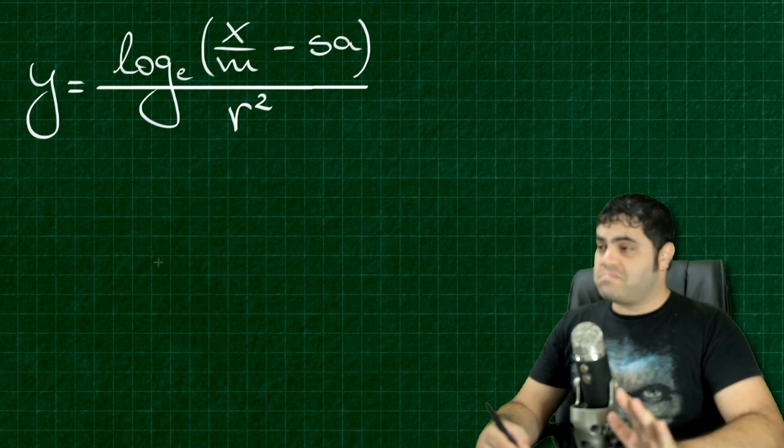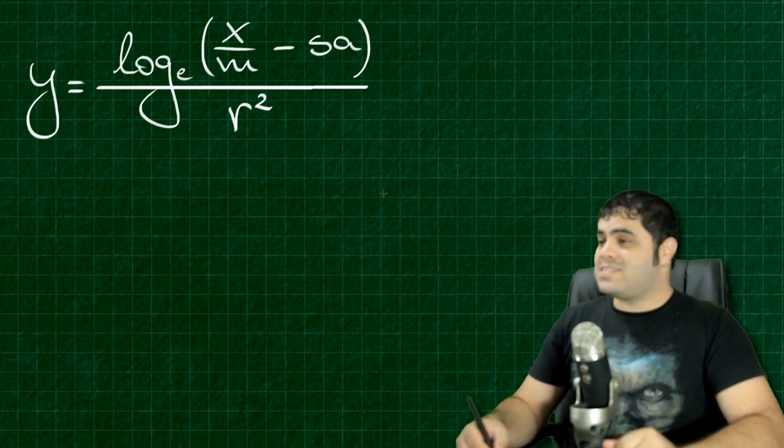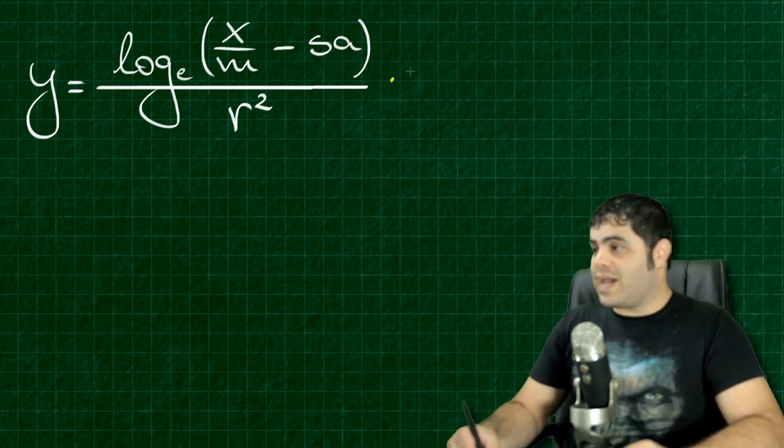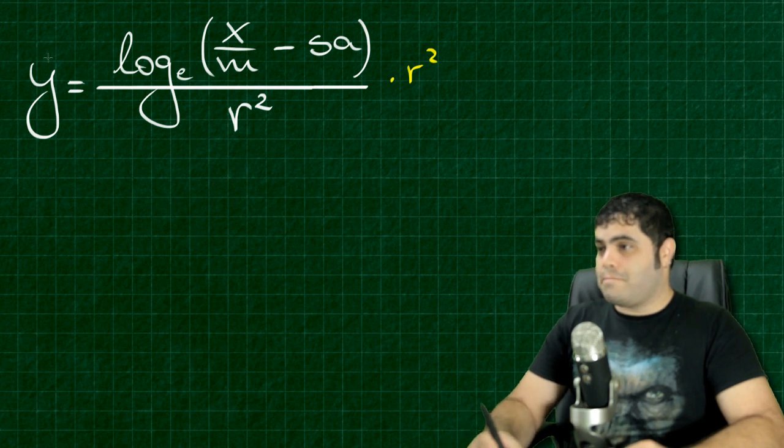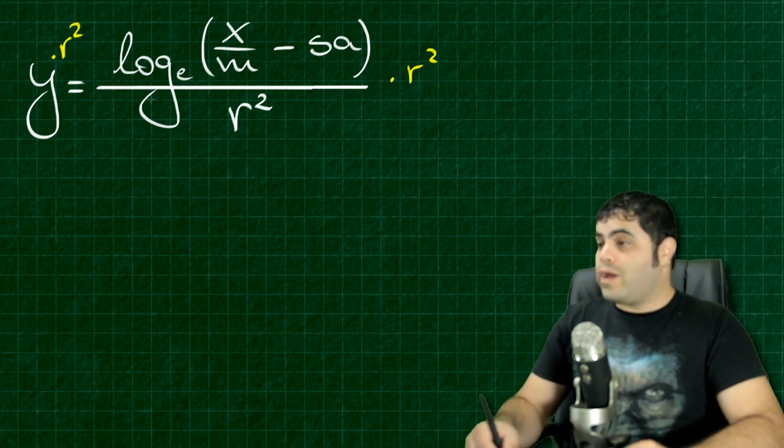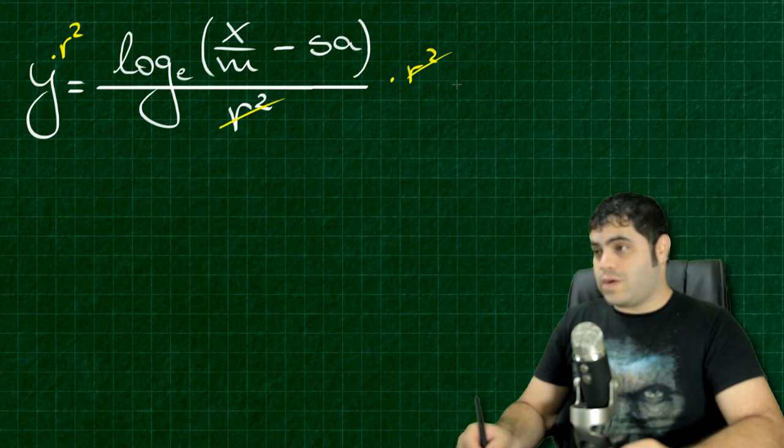So let's solve this equation and see what happens. The first thing I want to do here is multiply both sides by R squared. When I do this, I can cancel out this term.